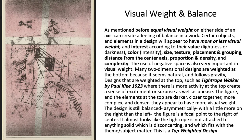In order to create balance in your design, you have to have equal visual weight on either side of an axis, whether it's symmetrical or asymmetrical. You can use value, color, size, texture, placement and grouping, and distance from the center axis of your objects, as well as proportion and density, complexity, and interest of the objects. Usually the weight is at the bottom of the design, but in Tightrope Walker by Paul Klee, the visual weight is at the top with the figure, which is an object of interest. It feels like it's not based on normal gravity — the tightrope doesn't feel tied to anything substantial, which adds to the whole feeling of the design.